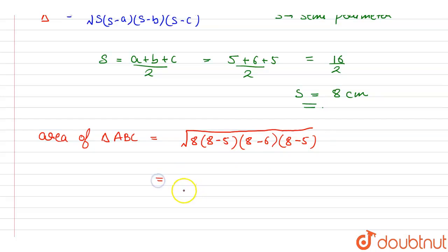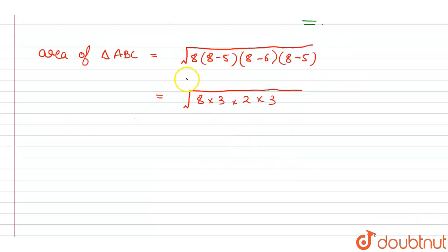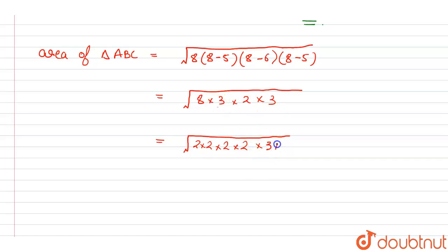Simplifying, this is the square root of 8 multiplied by 3, multiplied by 2, multiplied by 3. We can split 8 into 2 times 2 times 2. So under the root we have 2 times 2 times 2 times 2 times 3 times 3. We can see that we have two pairs of 2 and one pair of 3, so taking them out we are left with 2 multiplied by 2 multiplied by 3.